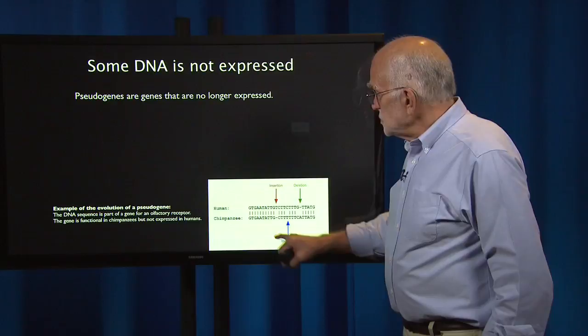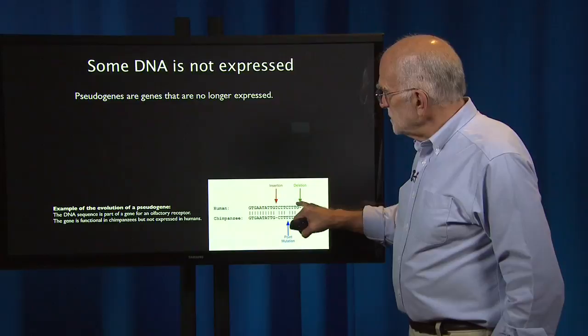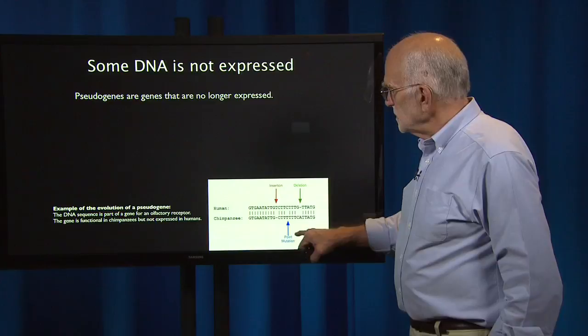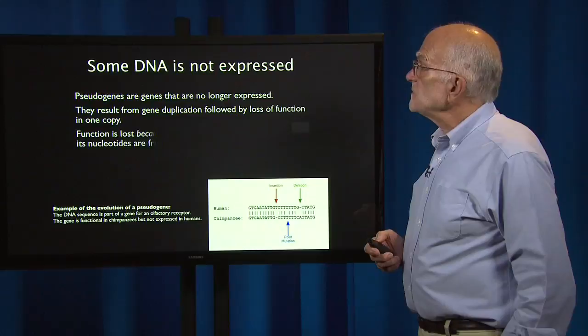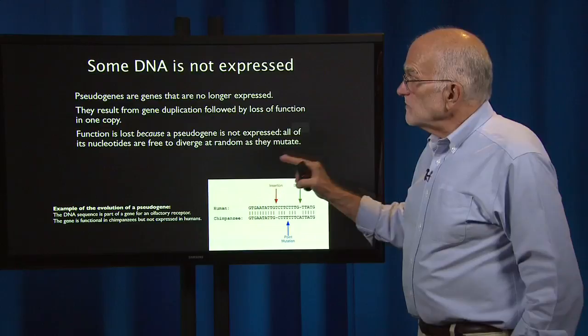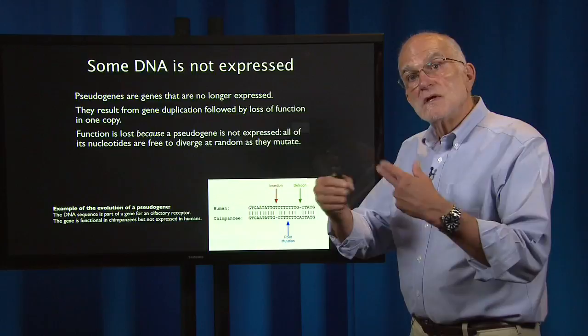In the chimpanzee, this gene is functional, but in humans it is not. There have been three different mutations between humans and chimpanzees: an insertion, a deletion, and a point mutation. Pseudogenes result from a gene duplication usually followed by loss of function in one copy. Because the pseudogene is not expressed, all of its nucleotides are free to diverge at random as they mutate, producing a buildup of genetic variation.